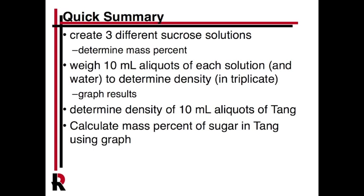We should get a hopefully linear fit. The line we generate can then be used to determine the density of an unknown solution — in this case, Tang. We're only going to do one unknown solution. By calculating the density of Tang, just weighing out 10 mL aliquots again, you should be able to use the graph to calculate the mass percent of sugar in Tang and figure out how much sugar is in it. This is a fundamental question: how much stuff do I have?